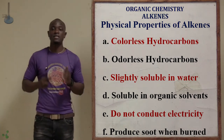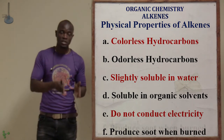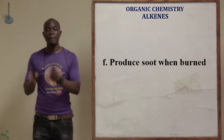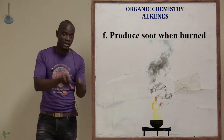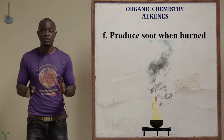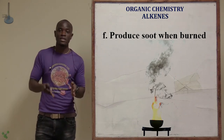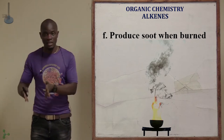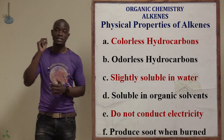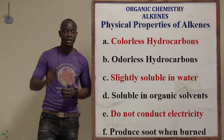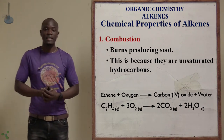Since alkenes are unsaturated hydrocarbons, they produce a lot of soot when burnt. Remember, alkanes are saturated hydrocarbons and don't produce soot when heated. Alkenes are unsaturated hydrocarbons, and therefore they produce soot when heated because of their unsaturated nature. Apart from the physical properties, let's now look at the chemical properties of alkenes.